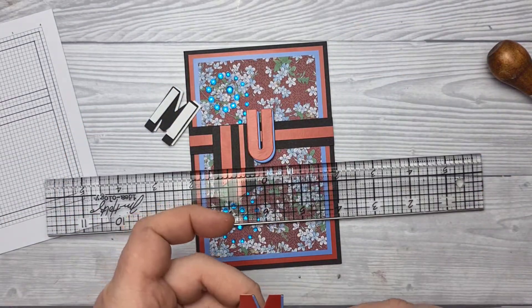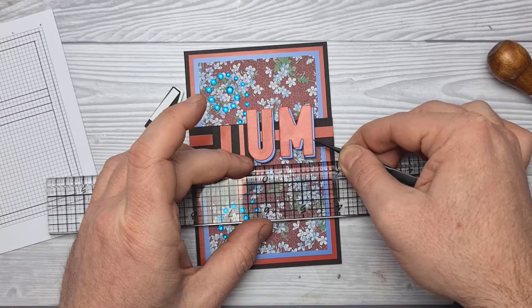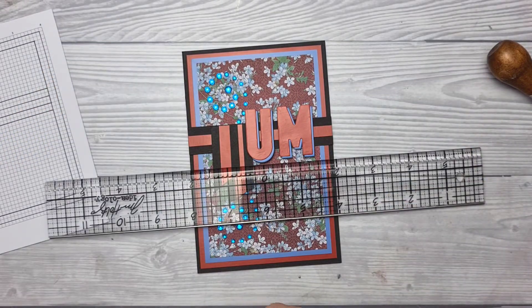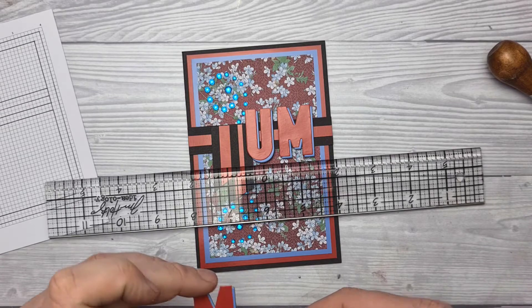So I'm just using the ruler there to find the centre position for the U. I know in America you like to say mom as opposed to mum. So you can always switch out that letter.